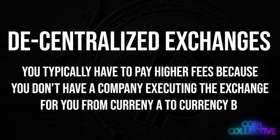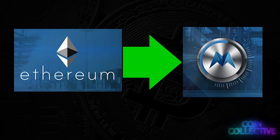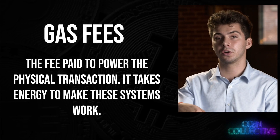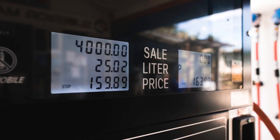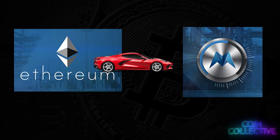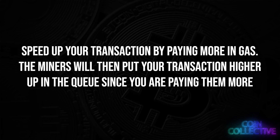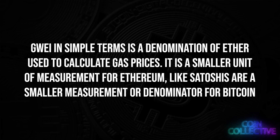On the Ethereum network, going from Ethereum to a token like Morpheus Network requires paying gas fees. Think of gas fees as literally the gas you put in your car to drive from point A to point B — you have to pay for that resource to make the transaction successful. The reason for these high fees is because the proof-of-work consensus that Ethereum uses requires high amounts of electricity. If you want to speed up your transaction using GWEI, you pay more Ethereum and miners will put your transaction higher up in the queue.